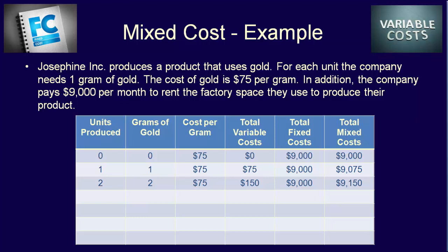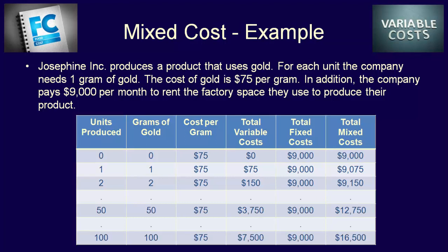Now let's jump up to 50 and 100 units. Total mixed cost for 50 units equals 50 × $75 plus $9,000, which equals $12,750. For 100 units, we take 100 × $75 plus $9,000 and get a total of $16,500.